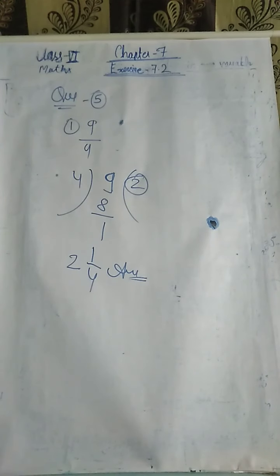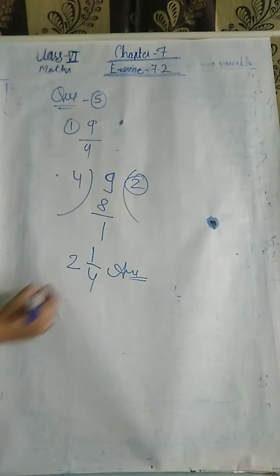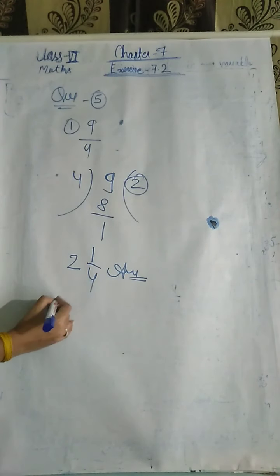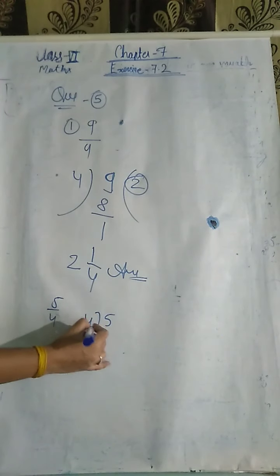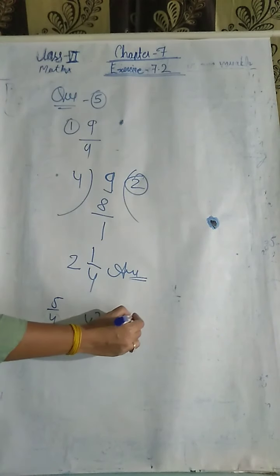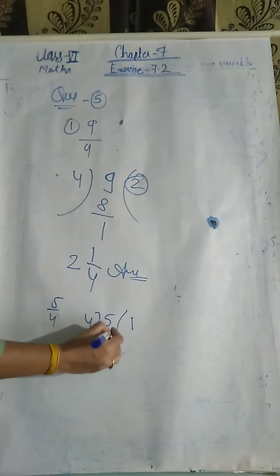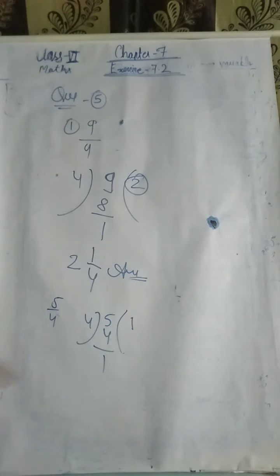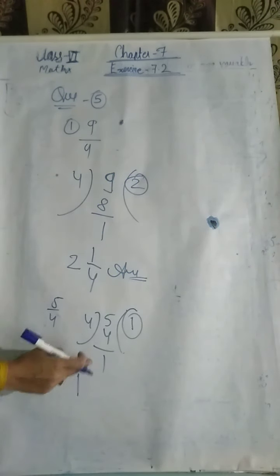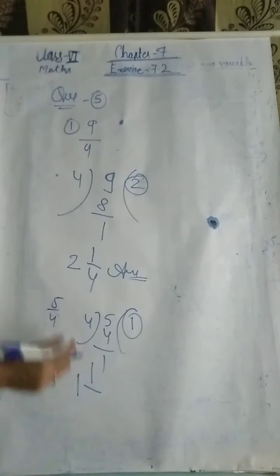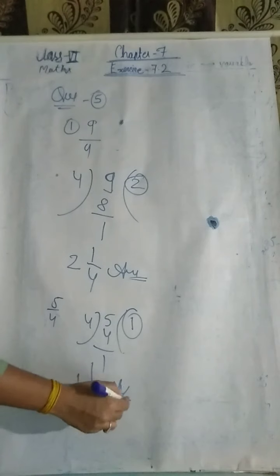Suppose the question is 5 upon 4. What do you do? 5 divided by 4: 4 comes up as quotient — that is 1. Remaining is 1. The remainder goes to the numerator in the middle. Answer is 1 and 1 upon 4.